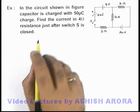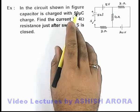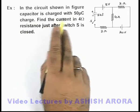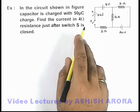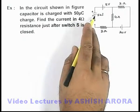In this example, it is given that in the circuit shown in figure, the capacitor is charged with 50 microcoulomb charge and we are also given with the polarity on the plates, the way charge is placed on it.